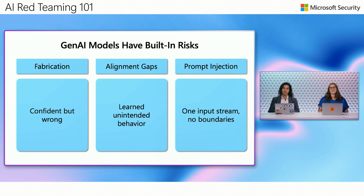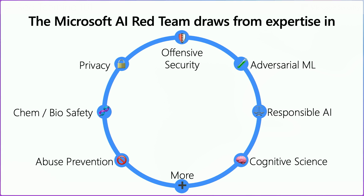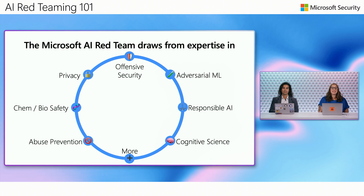When we do our Red Teaming operations, it's important to test for both the safety and the security of these systems in tandem, as they often overlap. The Microsoft AI Red Team has been around since 2018. We're responsible for Red Teaming Microsoft's production AI systems — things like Copilot, generative models, and autonomous agents — and we also evaluate OpenAI models before their release. We're often the last checkpoint before a system ships. Our team brings together people with backgrounds in offensive security, adversarial machine learning, responsible AI, abuse prevention, privacy, biological safety, and more. This variety isn't just interesting — it's really necessary, because no one discipline can cover all the risks.